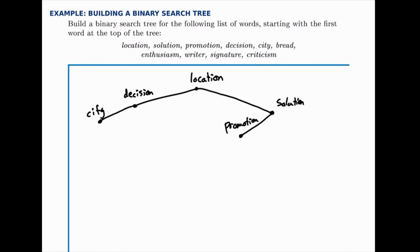'Bread' — we start at the top, move to the left, hit 'decision,' move to the left again, then hit 'city,' and move to the left again. Then for 'enthusiasm,' we start at the top — it's before 'location' and it's after 'decision,' so we insert a new node here to the right of 'decision.'